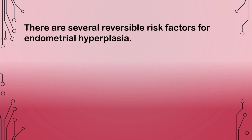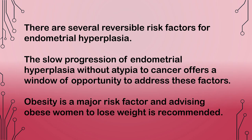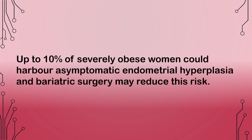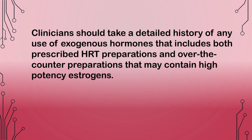Progestogen treatment is indicated in women who fail to regress following observation alone and in symptomatic women with abnormal uterine bleeding. There are several reversible risk factors for endometrial hyperplasia. The slow progression of endometrial hyperplasia without atypia to cancer offers a window of opportunity to address these factors. Obesity is a major risk factor; advising obese women to lose weight is recommended. Up to 10% of severely obese women could harbor asymptomatic endometrial hyperplasia and bariatric surgery may reduce this risk.